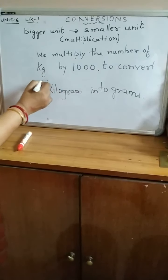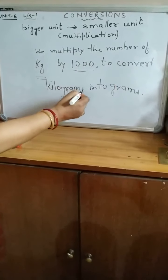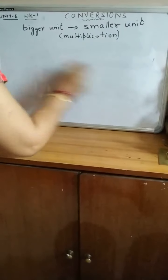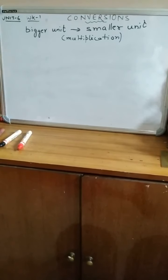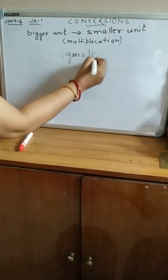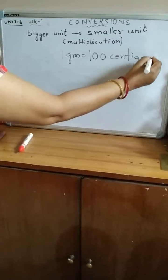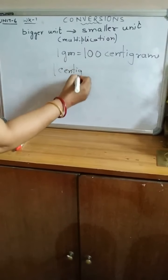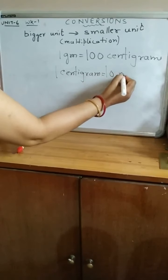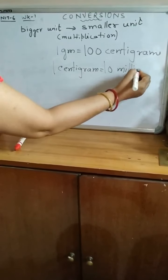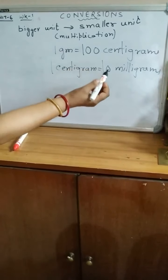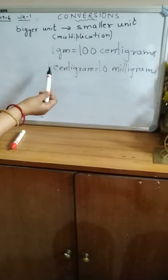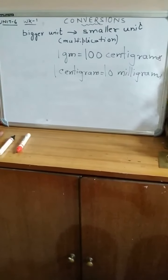In order to convert from kilogram to gram, we multiply the number of kilograms by 1000. Now let us write down some relationships among the units of weight. 1 gram equals 100 centigrams, and 1 centigram equals 10 milligrams.